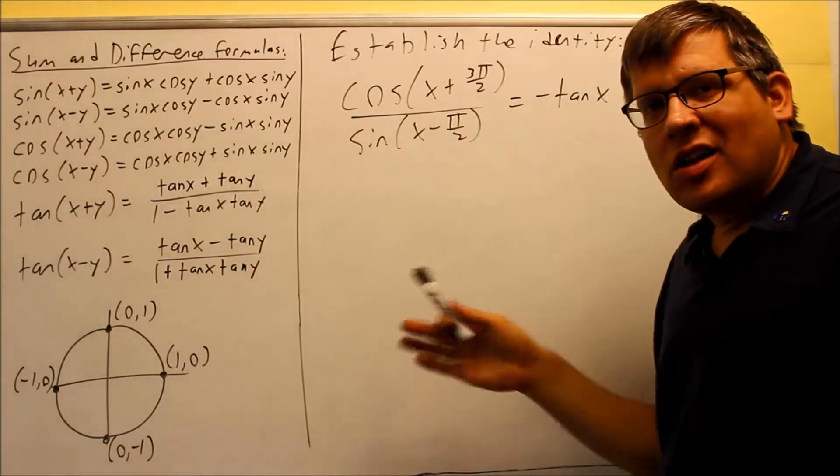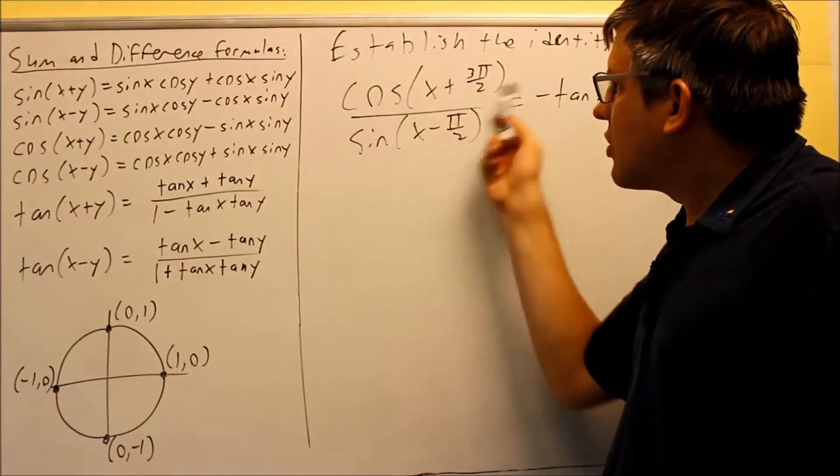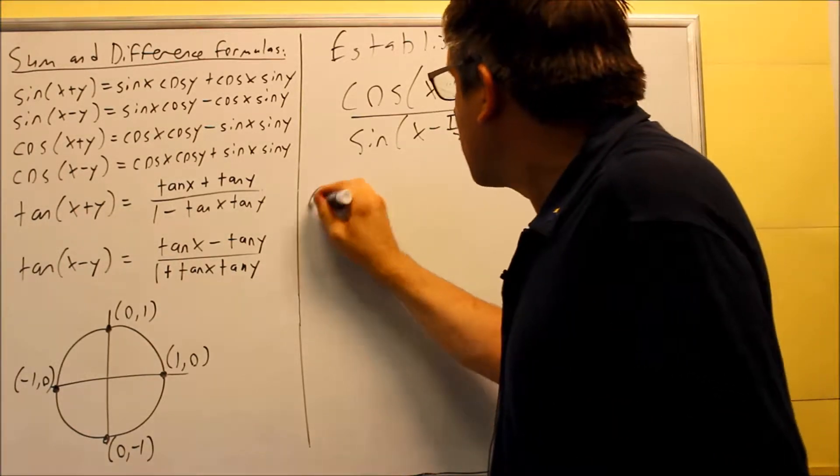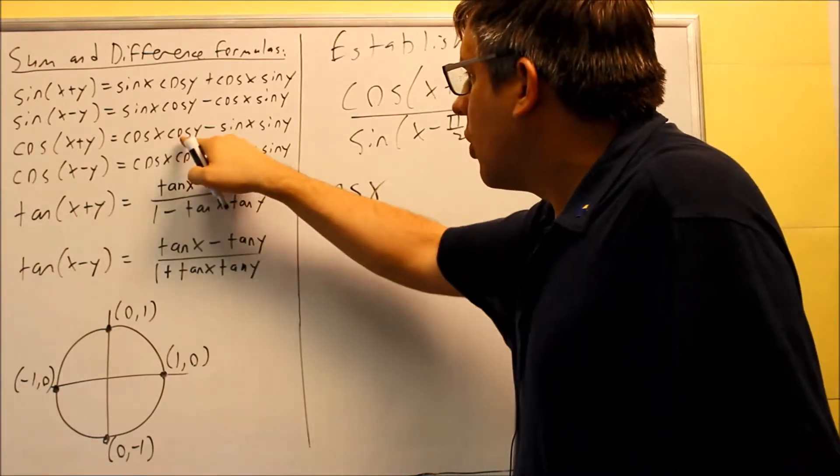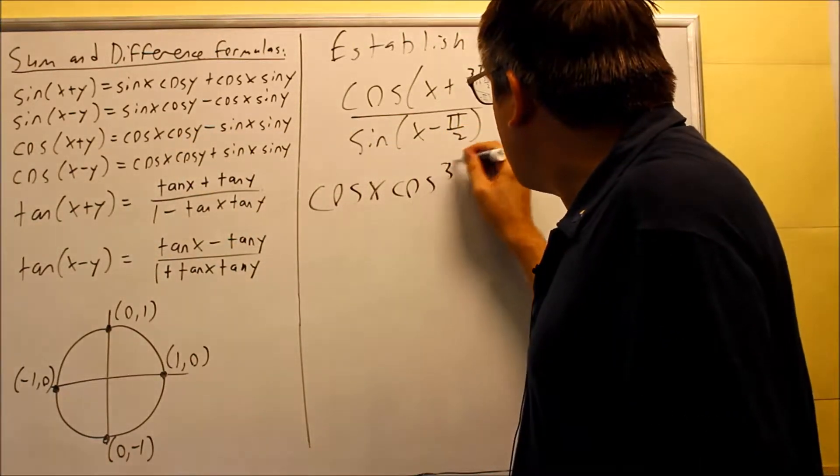This is kind of like what we did in the very first example in this session. We talked about how you can simplify the expression. That's what we're going to do here. Okay, so we're going to do that for the top. We're going to do cosine x and then cosine y, the y would be 3π over 2. So cosine 3π over 2.